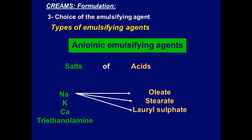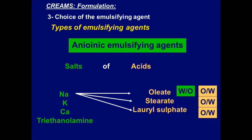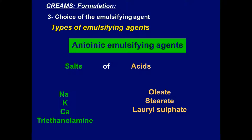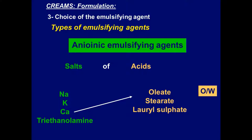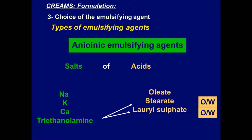What type of emulsion is given by these emulsifying agents? Generally, all sodium salts — sodium oleate, sodium stearate, and sodium lauryl sulfate — give oil-in-water emulsions. Potassium oleate and potassium stearate also give oil-in-water emulsions. Calcium oleate gives oil-in-water emulsion. Triethanolamine stearate and triethanolamine lauryl sulfate both give oil-in-water emulsions.